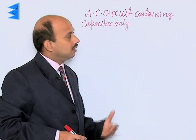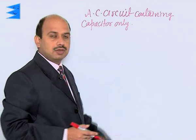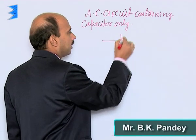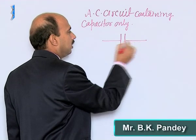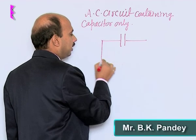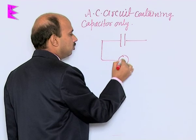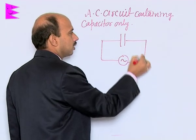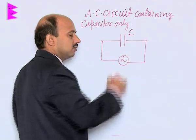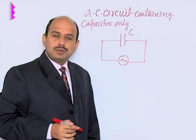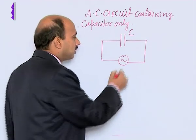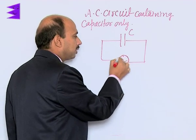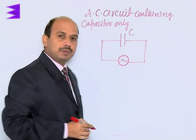Here we have an AC circuit containing a capacitor only. Suppose you have taken a capacitor connected to an AC source with capacitance C. When the capacitor is connected to the AC source, charging of the capacitor takes place.